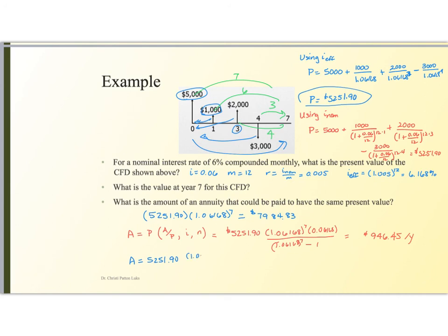Here, let me write it that way. Times 0.005 all over 1.005 to the 7 times 12 minus 1 and this gets me 76.72 but this is per month. Different answers because they are interpreting the problem in a different way. If I'm trying to make annual payments, this is the correct answer.